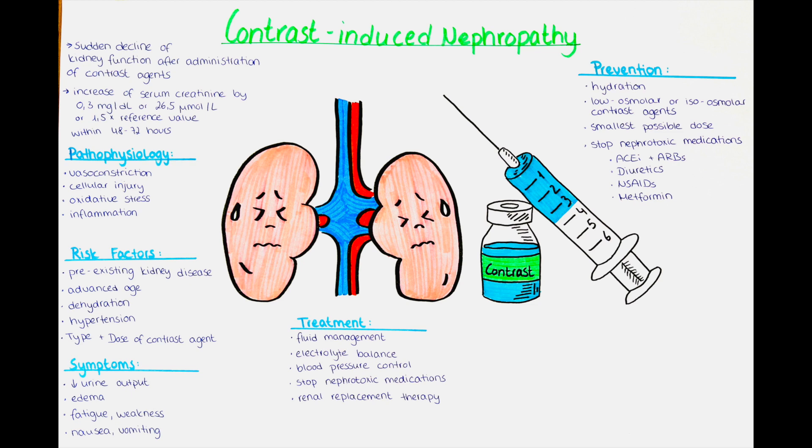In intra-arterial contrast administration a distinction is made between the renal first pass effect and the renal second pass effect. In the renal first pass effect, the contrast agent reaches the renal arteries in an undiluted form. This is the case when the injection is given directly into the left heart, thoracic or supra-renal aorta, or the renal arteries.